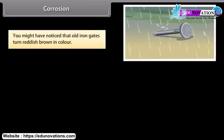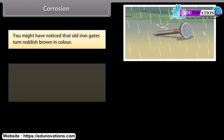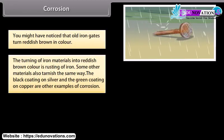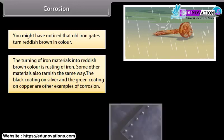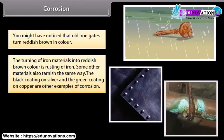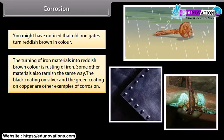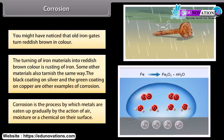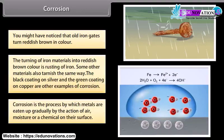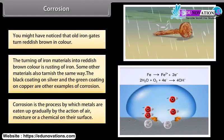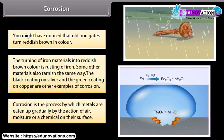You might have noticed that old iron gates turn reddish-brown in color. The turning of iron materials into reddish-brown color is rusting of iron. Some other materials also tarnish the same way. The black coating on silver and the green coating on copper are other examples of corrosion. Corrosion is the process by which metals are eaten up gradually by the action of air, moisture or a chemical on their surface.